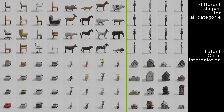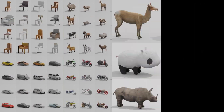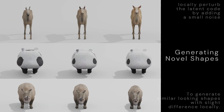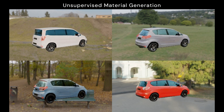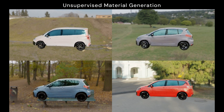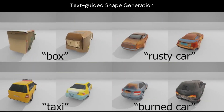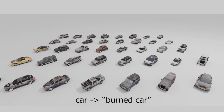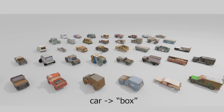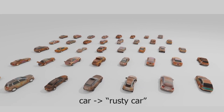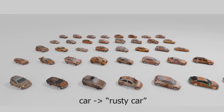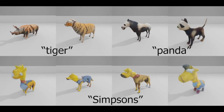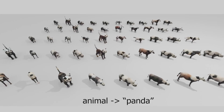We explore how Get3D uses advanced machine learning algorithms, specifically generative models, to map 2D image data into a fully realized 3D shape. The system is capable of producing versatile models for various applications, from gaming and virtual reality to film production and digital design. By making the process of creating 3D assets more accessible and efficient, NVIDIA's innovation promises to revolutionize the creative industry and open up new possibilities in fields like AI-driven design and simulation.